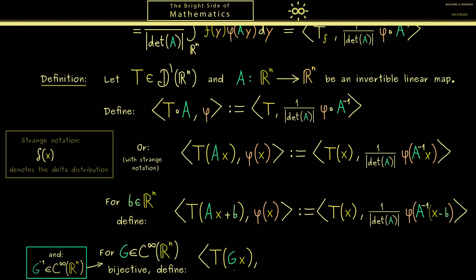But with this you see we can do the same thing and define the distribution T of g(x). Okay, now in order to define this, we can look at the integral again for a regular distribution, and there we see we need the Jacobian matrix here.